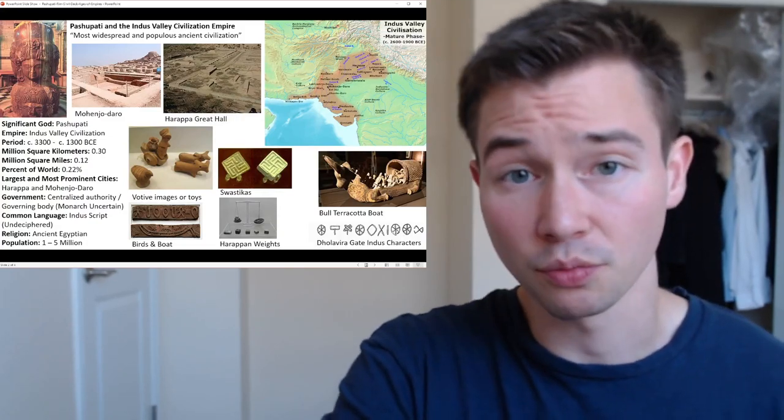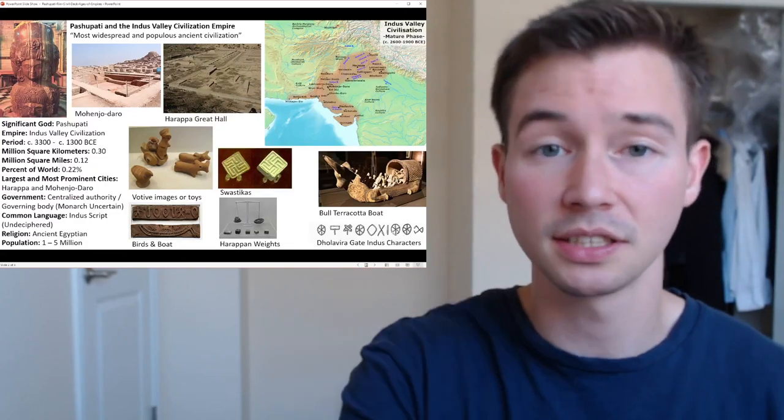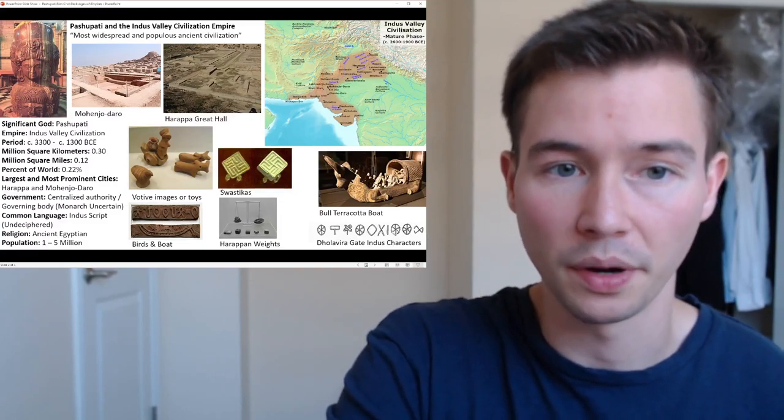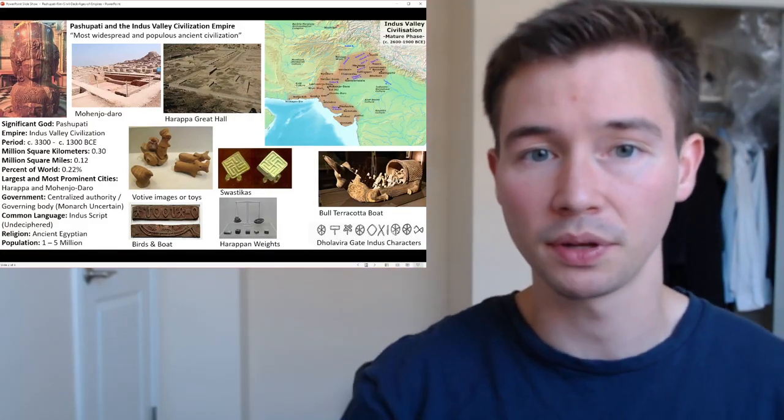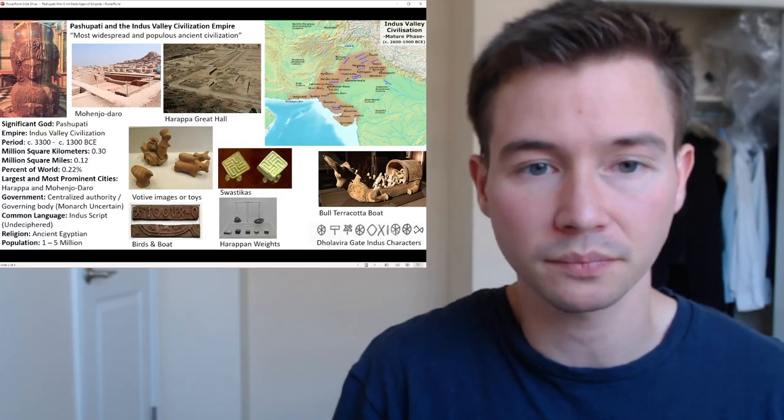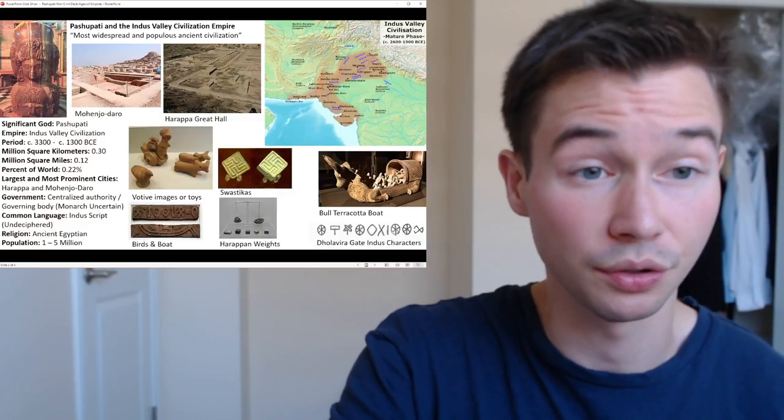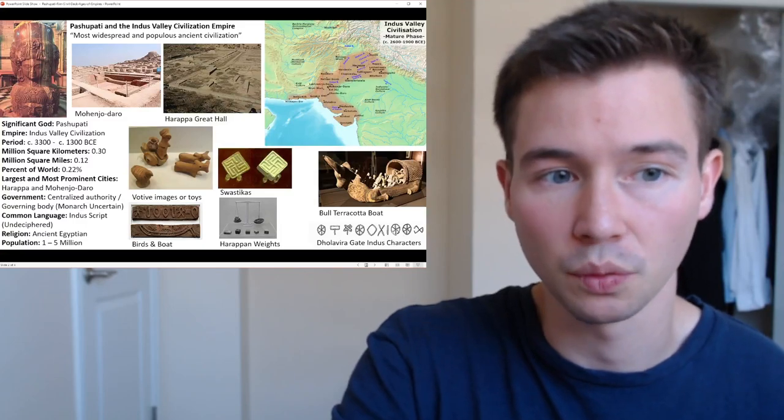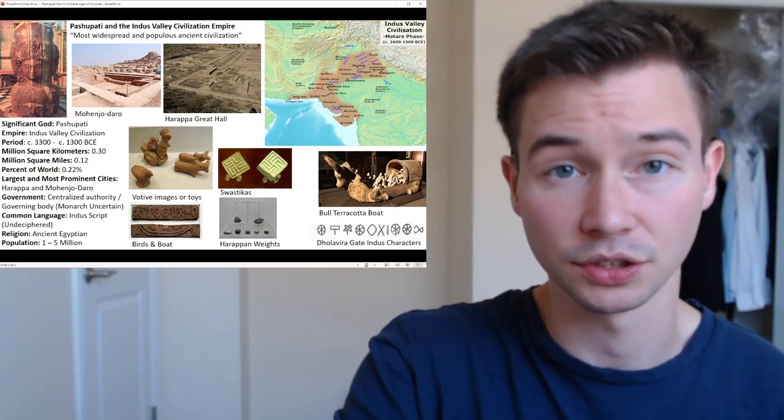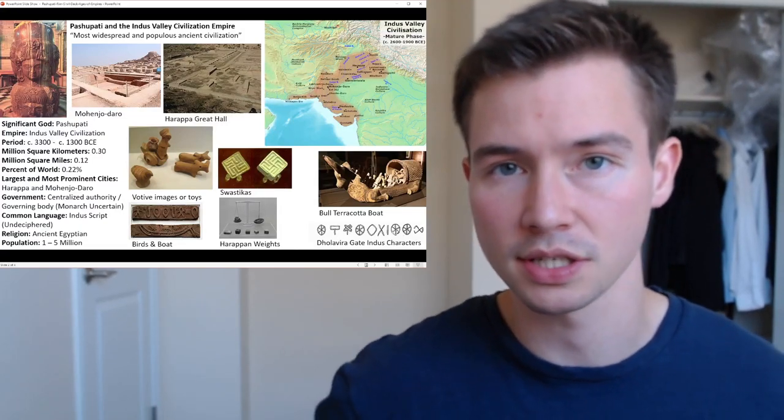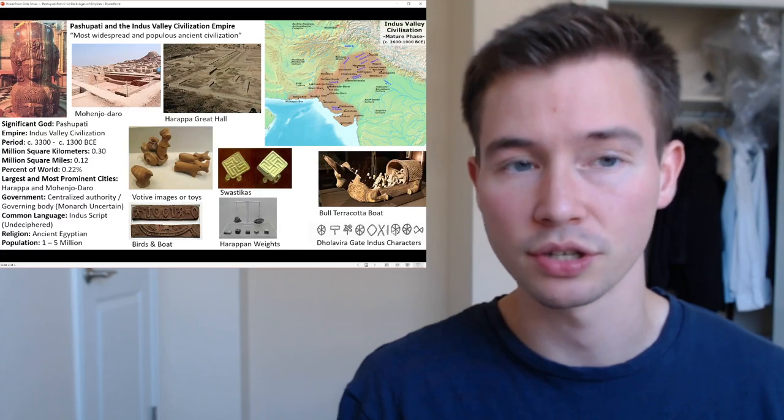In terms of other images, in the top right, we have a map of where the Indus Valley civilization took place. You can see there, there's Mohenjo-daro, about in the center, and Harappa, sort of up to the northeast a little bit more. To the top left, we have Mohenjo-daro, so you can see here how sophisticated their architecture was. To the right, we have the Great Hall in Harappa, also very sophisticated.